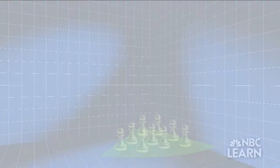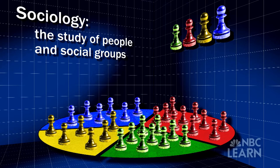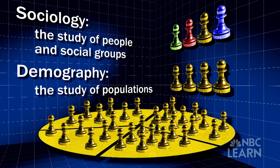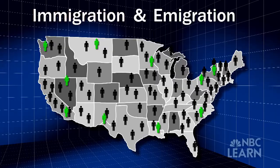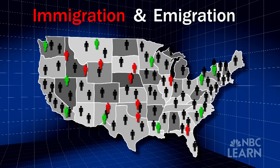Sociology broadly is a study of people and of social groups. And then demography is a study of population — in particular looking at how many people are born, how many people die, immigration into a place and emigration out of a place, to figure out how population changes over time.